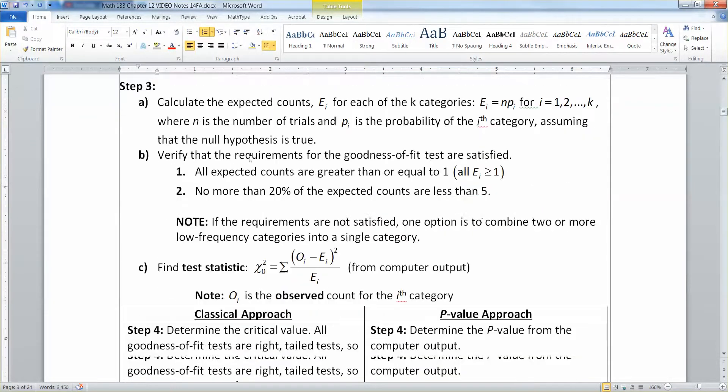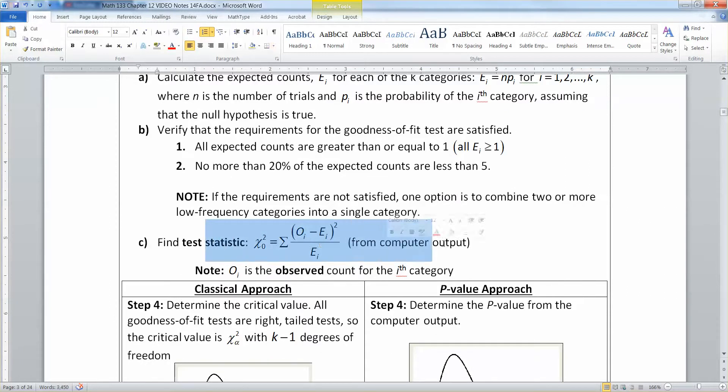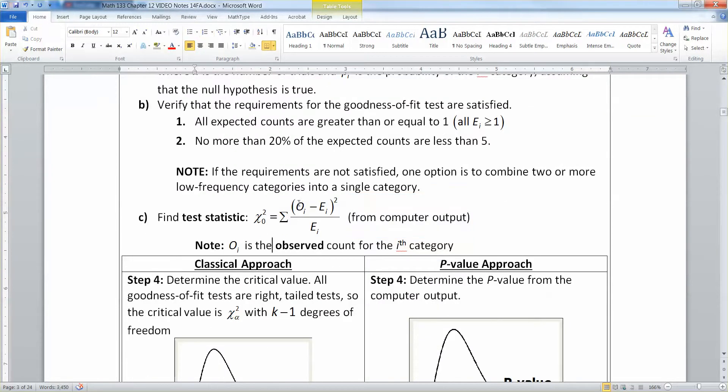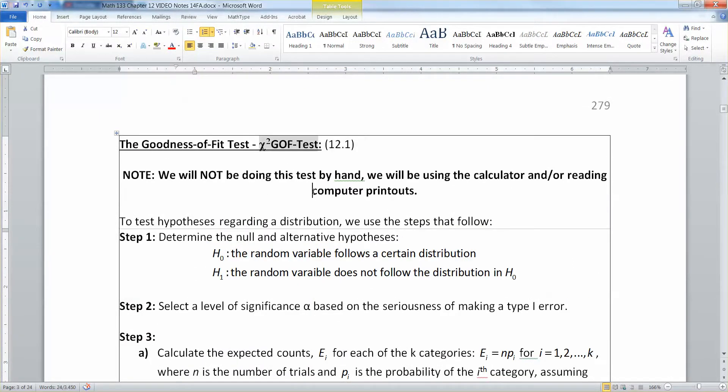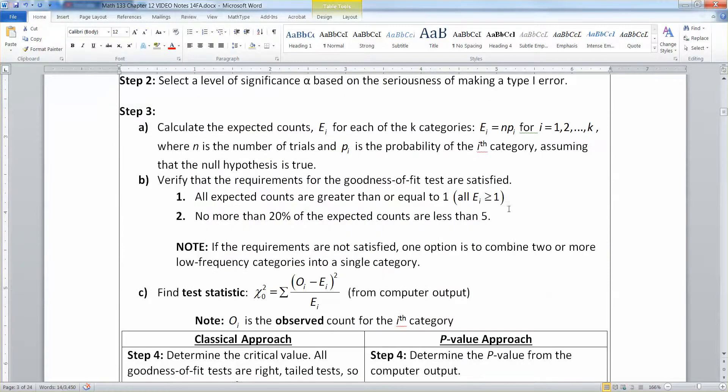Then we calculate our expected counts and find our test statistic, but we're going to get it from computer or calculator output. You are not going to find this by hand. The observed O is the observed value in each category and the E is the expected value. The requirements portion of this test comes a little bit lower than what you expect. Basically all your expected counts must be greater than or equal to one, and no more than twenty percent of the expected counts are less than five.